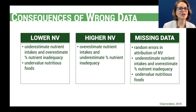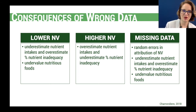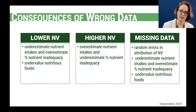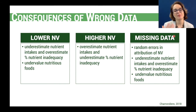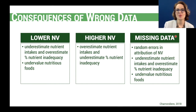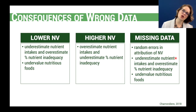Our conclusions will be quite different when we consider or not the mandatory fortification in a certain country. After all these examples, what are the consequences of using wrong data in our estimations? If we use a lower value than the actual nutrient content of a food, we will underestimate the nutrient intakes and overestimate the percentage of nutrient inadequacy, and also undervalue nutritious foods. On the other hand, if we use higher nutrient values, we will overestimate the nutrient intake and underestimate the percentage of nutrient inadequacy. When we have a lot of missing data — which doesn't mean zero, but is usually treated as zero — these are random errors in the distribution of the nutrient value, and we will again underestimate nutrient intake and overestimate the percentage of nutrient inadequacy.